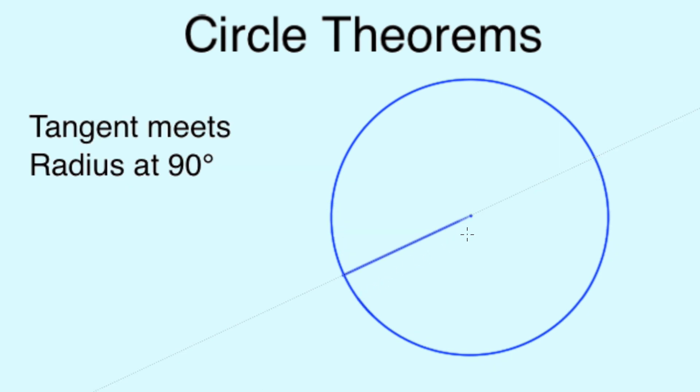Where a radius, that's the line from the center of the circle, meets a tangent, a straight line outside the circle touching the circle, the angle here will always be a right angle, or 90 degrees.